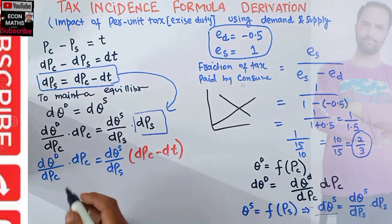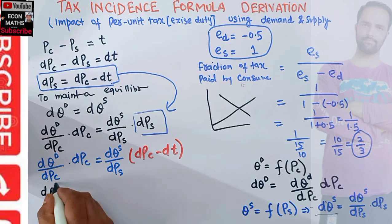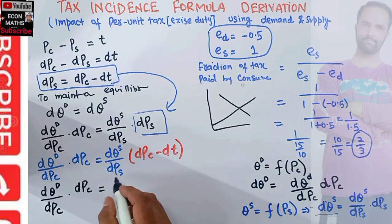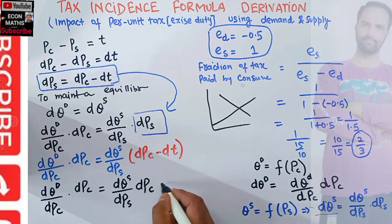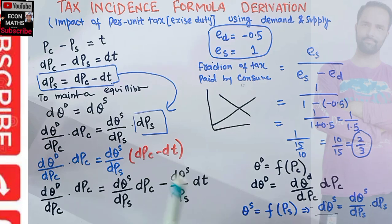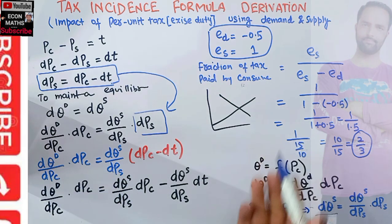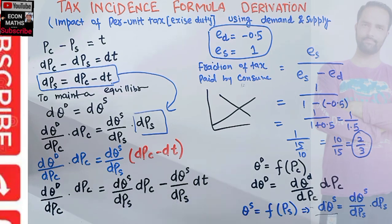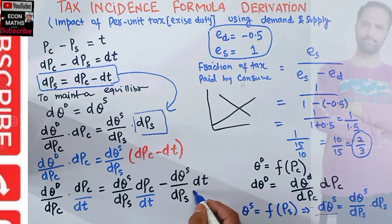Expanding the right-hand side: (dQ^D / dPC) · dPC = (dQ^S / dPS) · dPC − (dQ^S / dPS) · dT. Now divide both sides by dT, so each term is divided by dT — the dT terms on the right cancel where applicable.